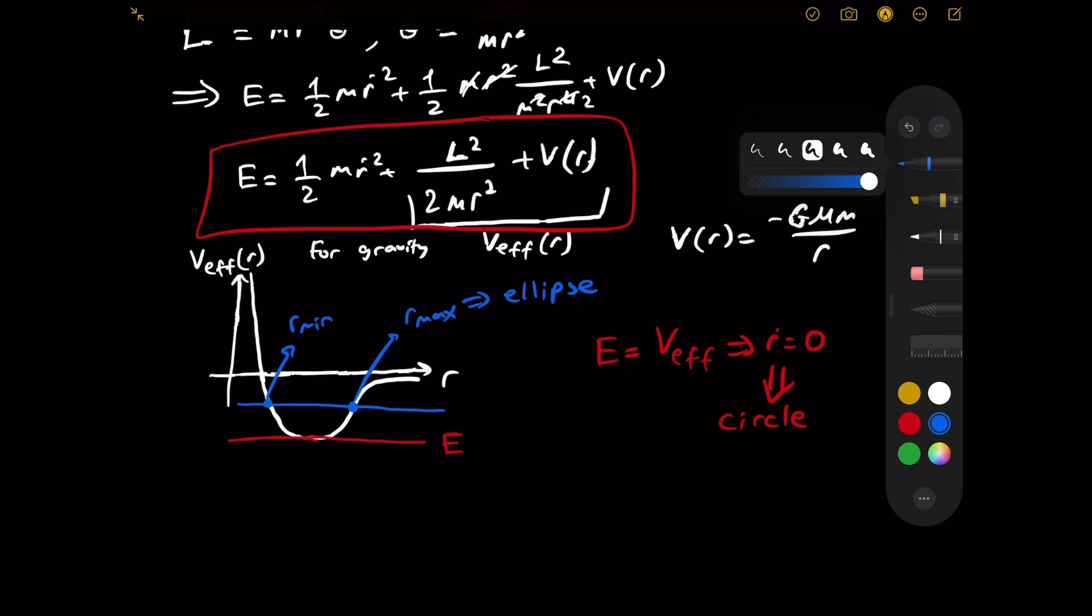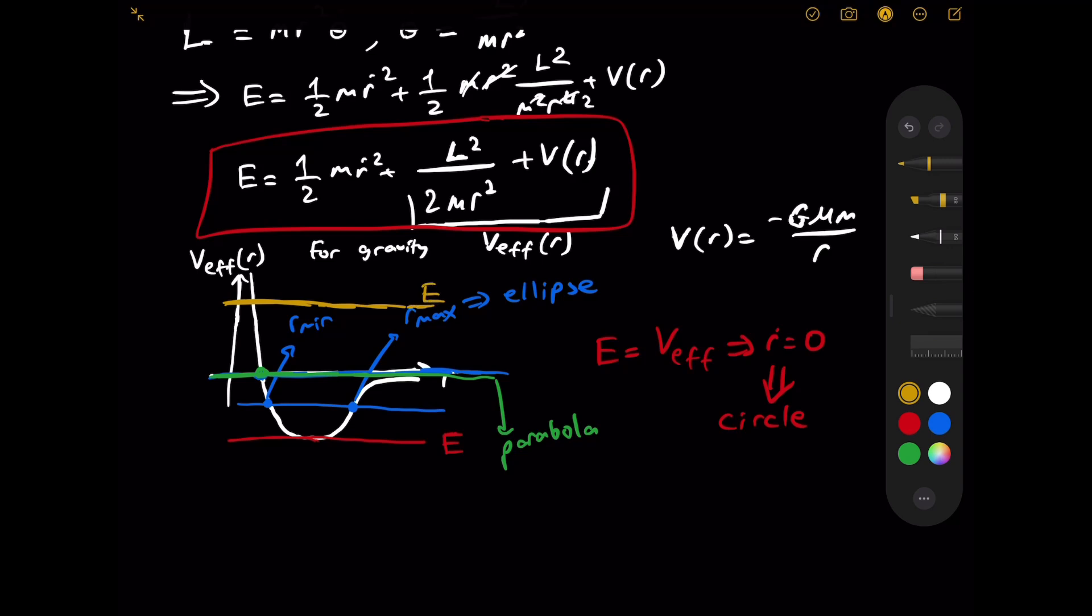And there are other cases as well to consider. For example, what if energy is just at zero? What if it is here? There is just one point, and that would, I believe, describe a parabola. And if the energy were to be like here, let's say greater than zero, well then that describes a hyperbola.